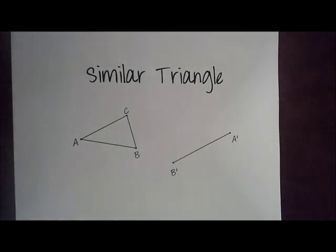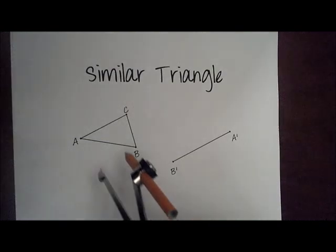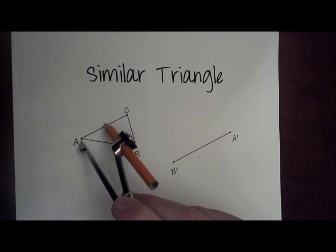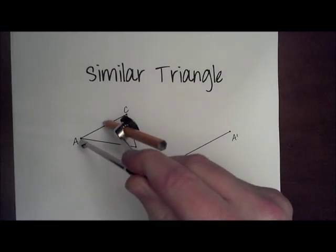So instead of copying lengths of sides here, we're going to be copying angles because we know that similar triangles have corresponding angles that are congruent. So let's copy angle A first. I'll put my compass point on A and strike an arc.